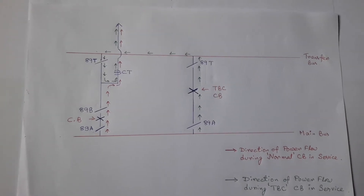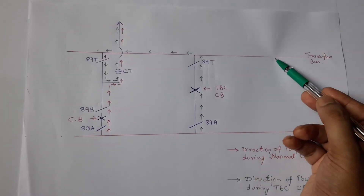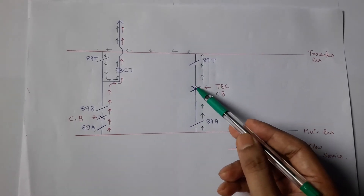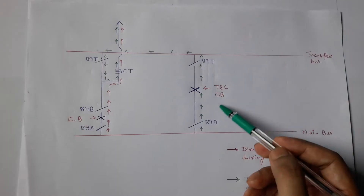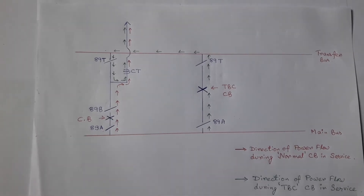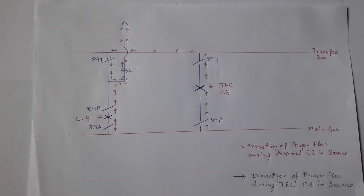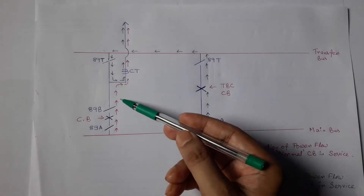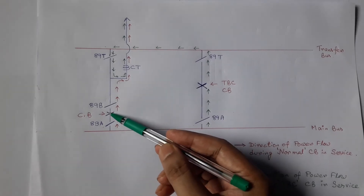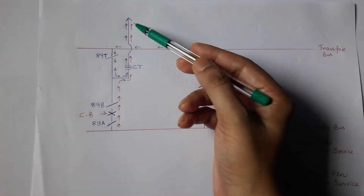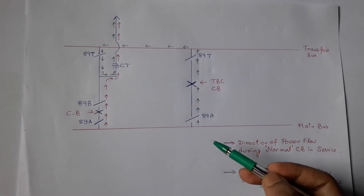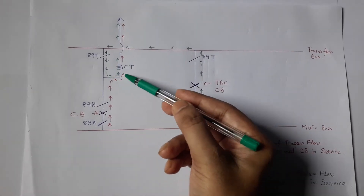In a substation with one main and one transfer bus arrangement, this breaker is called the main circuit breaker and this one is called the transfer bus coupler (TBC) circuit breaker. During normal operation, the normal circuit breaker is in service and the direction of power flow during normal circuit breaker operation is shown in red color.